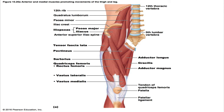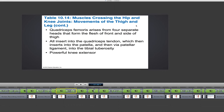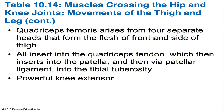At the knee joint, flexion and extension are the main movements. The sole knee extensor is the quadriceps femoris muscle of the anterior thigh — the most powerful muscle in the body. The quadriceps is antagonized by the hamstrings of the posterior compartment, which are the prime movers of knee flexion. The quadriceps arise from four separate heads forming the flesh of the front and side of the thighs, with a common insertion via the quadriceps tendon into the patella and then via the patellar ligament into the tibial tuberosity. They're innervated by the femoral nerve, and their tone plays an important role in strengthening the knee joint.